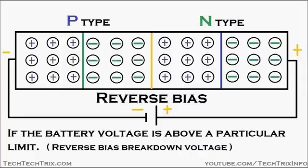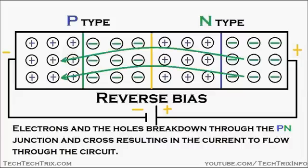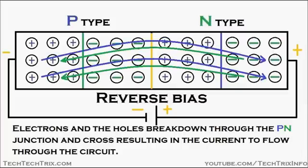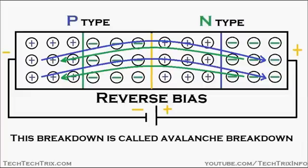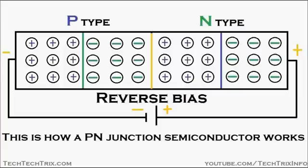However, if the battery voltage exceeds a particular limit called the reverse bias breakdown voltage, electrons and holes break through the PN junction, resulting in current flowing through the circuit. Electrons cross the junction and move towards the P region, while holes break through and move towards the N region. This breakdown is called avalanche breakdown. In this process, the current through the PN junction is very high and the junction gets damaged due to overheating caused by the excess flow of current.